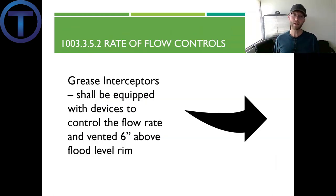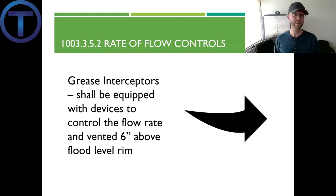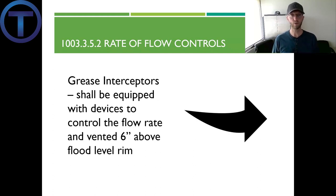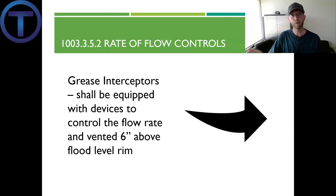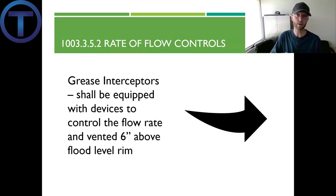Section 1003.3.5.2 talks about rate of flow controls, stating that grease interceptors shall be equipped with devices to control the flow rate, and they have to have a vent that goes at least six inches above the flood level rim. This way, as we're processing all that grease, we can control how much is being processed at a time by slowing the flow.